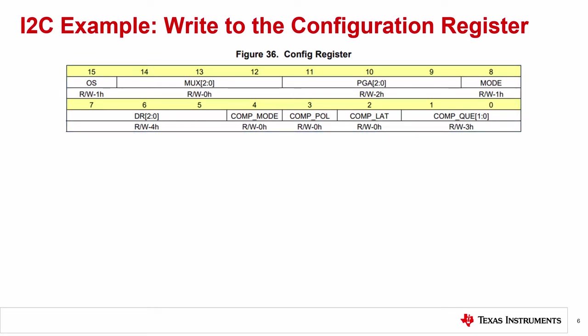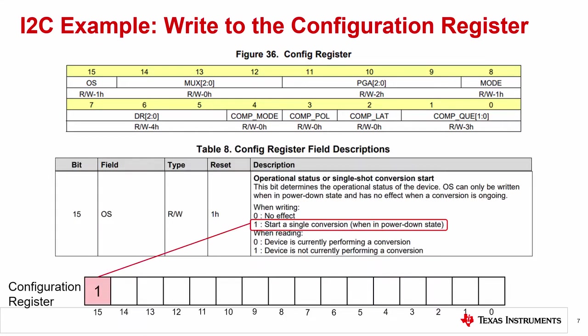Writing to this register will program the configuration of the device and start a conversion. We'll discuss the settings for this configuration register and determine what to program into the device. Figure 36 from the datasheet shows the configuration register data fields. This shows the bit positions in the configuration register and what they are used for. Once we determine all of the settings for the configuration register, we can use an I2C write to set the register. Table 8 in the datasheet shows the configuration register field descriptions, giving a detailed description of the bit settings.